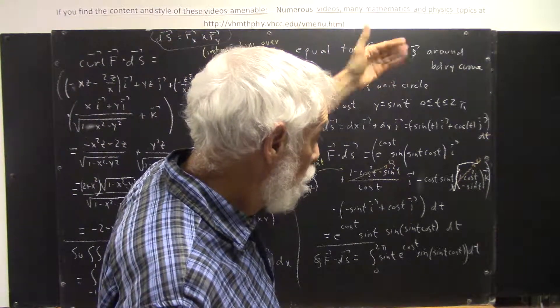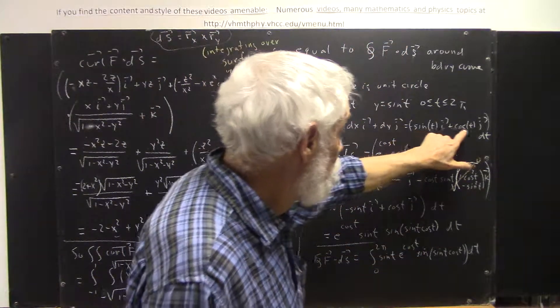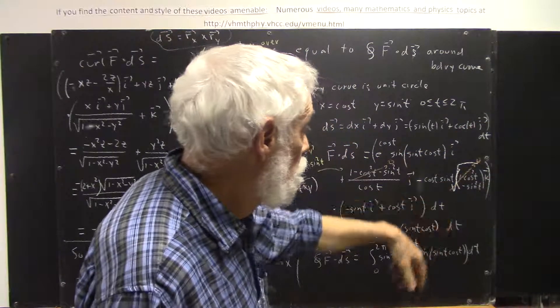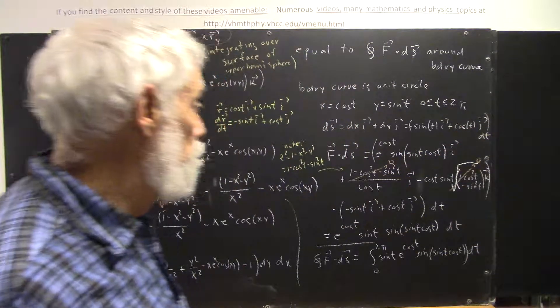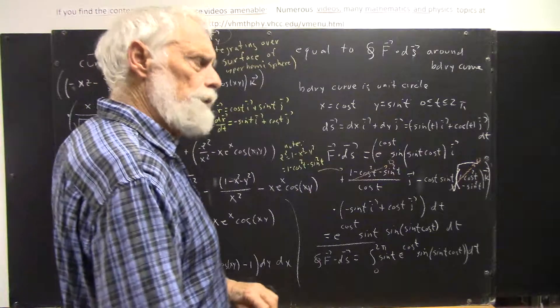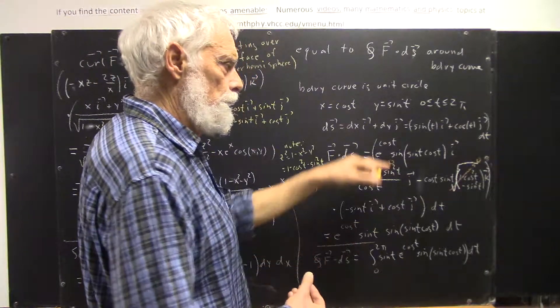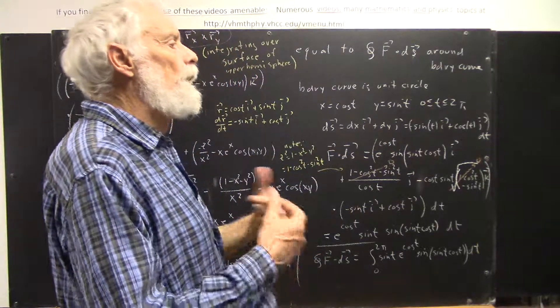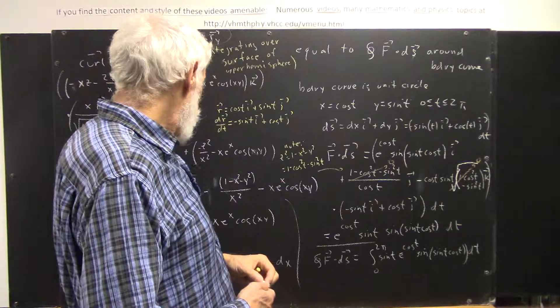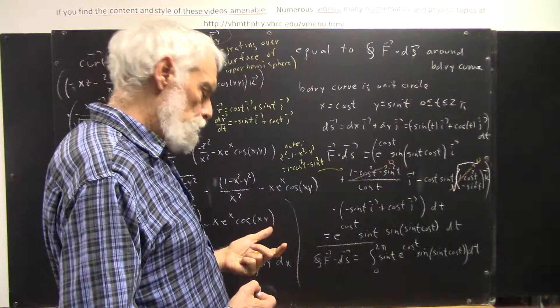dx is negative sine t, dy is cosine t, dt. So, we have our negative sine t times i, our cosine t times j times dt.